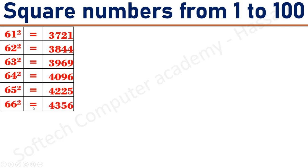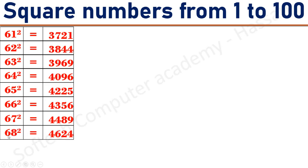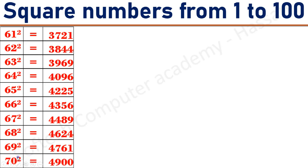66 square equals 4356. 67 square equals 4489. 68 square equals 4624. 69 square equals 4761. 70 square equals 4900.